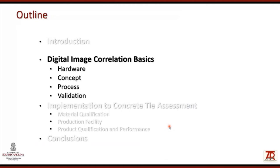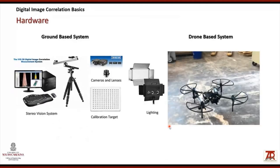What does the system consist of? The hardware is essentially two cameras for stereo systems and a computer that performs the image correlation. We also need appropriate lenses, lights, filters, and a calibration target to compute the camera parameters. The camera system can be mounted on a stationary system or on a drone. We have successfully acquired measurements from drone-mounted DIC systems and, to the best of our knowledge, we are the first group to present results in this area.